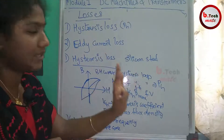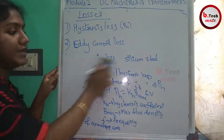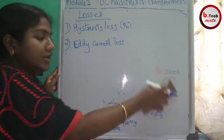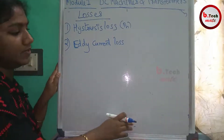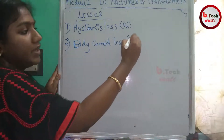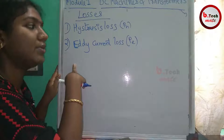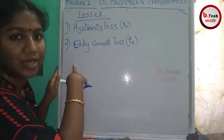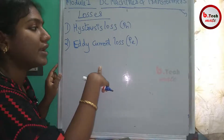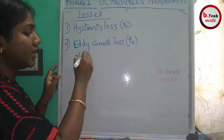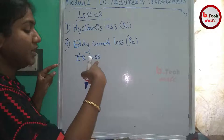We prefer silicon steel to be used for the armature to reduce hysteresis losses. Eddy current loss is denoted as P_e. This eddy current loss occurs because an EMF is induced in the armature; the induced EMF causes a current to flow, and that loss is an I²R loss.